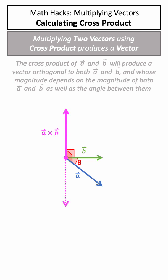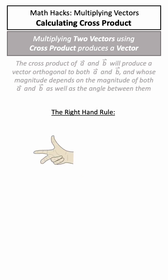But how do we know our new vector points in this direction and not the opposite direction shown by the dotted line? Well, we use the right hand rule.